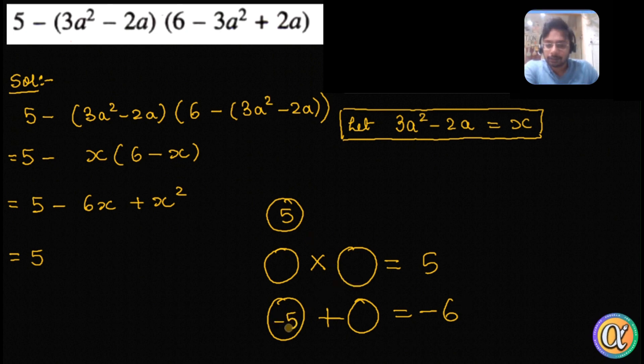Not 3 and 2, it is 5 and 1 combination. Minus 5 plus minus 1 is minus 6, but minus 5 into minus 1 gives you plus 5. So it's minus 5x minus x plus x squared.